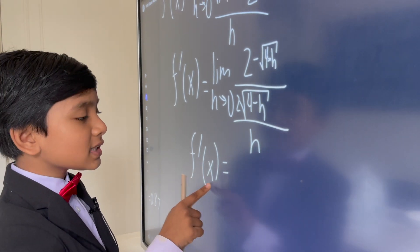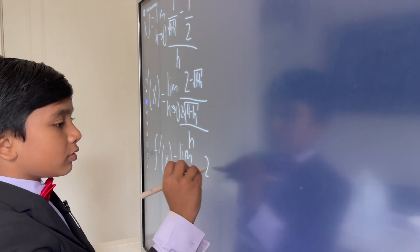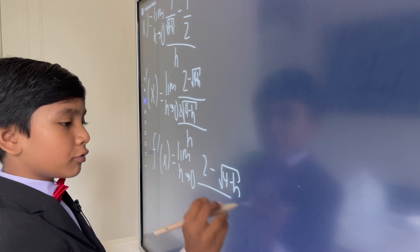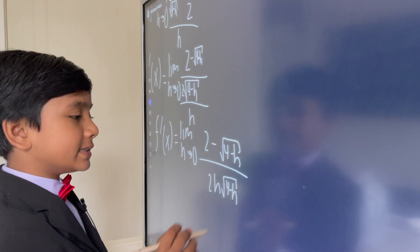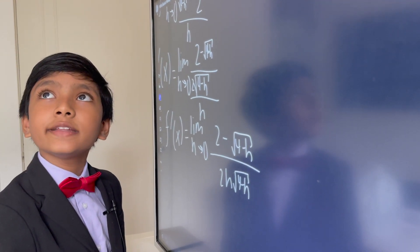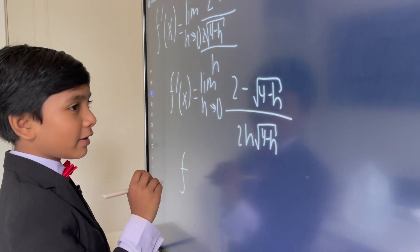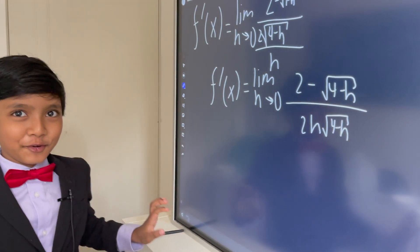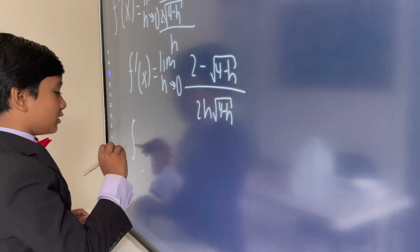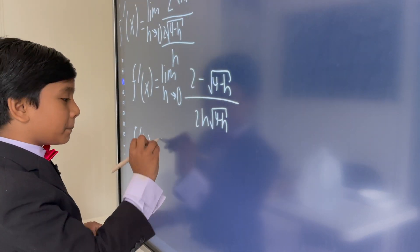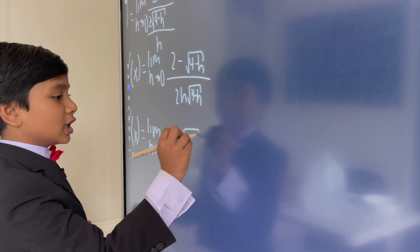f prime of x, the limit as h goes to 0. And so, we get 2 minus the square root of 4 minus h over 2 h square root of 4 minus h. Man, that dead mosquito has been lying there. Oh, sorry. I got a little distracted. Alright. So, anyways, now what we're going to do, we're going to use a cool mathy trick called conjugation. It basically just takes advantage of the difference of squares. So, yeah, this part is going to be pretty boring. But, brace ourselves, there's going to be a lot of math.